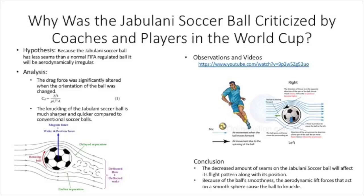The Jabulani is one of the most criticized soccer balls by both players and coaches across the nation. This ball was used in the 2010 FIFA World Cup. A Brazilian goalkeeper by the name of Julio Cesar compared this ball to a supermarket ball that favored strikers and worked against all of the goalkeepers. This ball is known to knuckle throughout the air, making it nearly impossible for goalies to protect the goal.